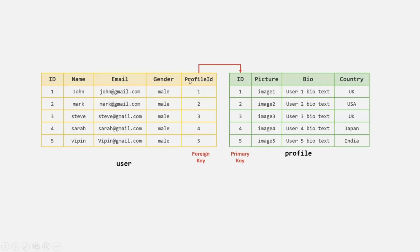So on the profile ID column, we will have a foreign key. This foreign key is going to store the primary key from the related table, and in this way we create a relation between two tables. In this example, we are storing the foreign key in the user table, so we are relating the user table to the profile table.